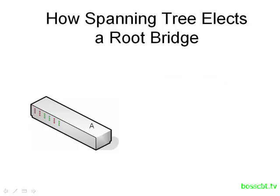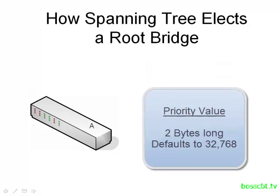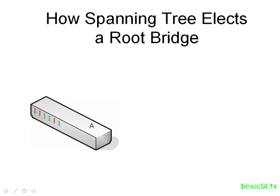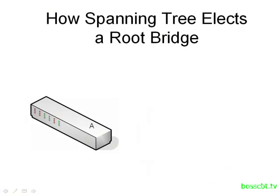Every switch participating in Spanning Tree has a Bridge ID. This is an 8-byte value made up of two parts. The first part is known as the priority value. It's 2 bytes long, and by default it has a value of 32768. This value is configurable, meaning we can change it, and later on we'll see how changing it can affect the overall process of electing a root bridge.